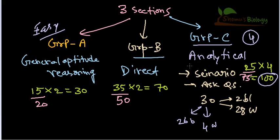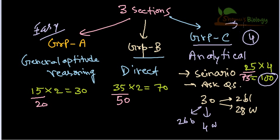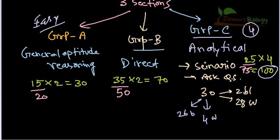An important reminder: there is negative marking, and it is dangerous. Negative marking can seriously hurt your results. In Group C, one wrong answer costs you minus five marks while one right answer gives plus four, so mistakes in Group C are very costly.